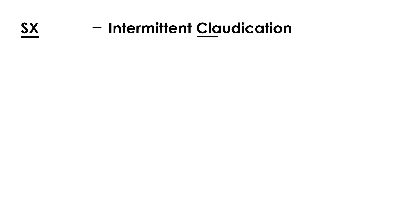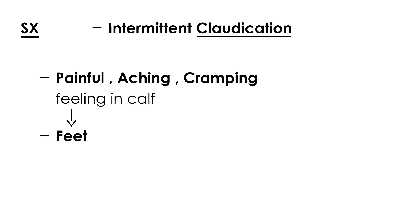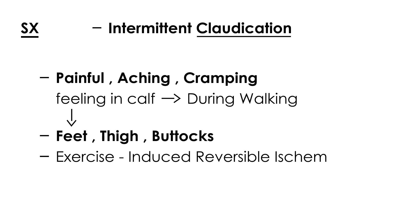The hallmark symptom is intermittent claudication — the pain comes and goes. It is often described as an ache or a cramp, most commonly felt in the calf, although it can also occur in the feet, thigh, or buttocks. This happens most commonly during exercise such as walking, and represents exercise-induced reversible ischemia — when the person stops, the pain goes away.